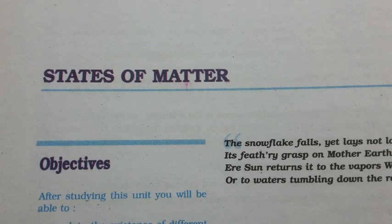5.4 The Gaseous State. This is the simplest state of matter. Throughout our life we remain immersed in the ocean of air, which is a mixture of gases. We spend our life in the lowermost layer of the atmosphere called the troposphere, which is held to the surface of the earth by gravitational force. The thin layer of atmosphere is vital to our life; it shields us from harmful radiations and contains substances like dioxygen, dinitrogen, carbon dioxide, water vapor, etc.